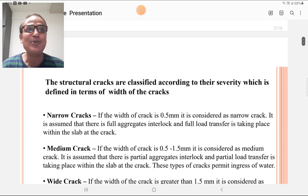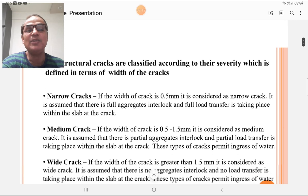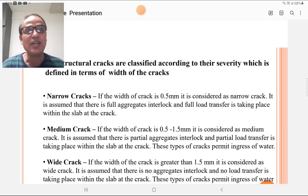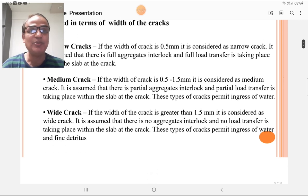The structural cracks are classified according to their severity, which is defined in terms of width of crack. If width of the crack is up to 0.5 mm, it is considered a narrow crack. It is assumed that full aggregate interlock and full load transfer is taking place within the slab at the crack. When width of the crack is between 0.5 mm to 1.5 mm, it is considered a medium crack. It is assumed that there is partial aggregate interlock and partial load transfer taking place within the slab at the crack. These types of cracks permit ingress of water.